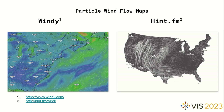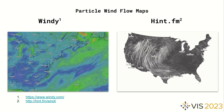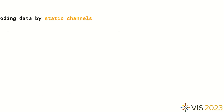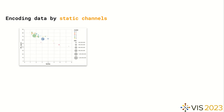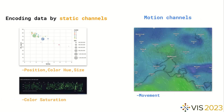Particle wind flow map is a popular method for visualizing wind data. Different from other charts that use static channels only, particle wind flow maps leverage motion as a main encoding channel.